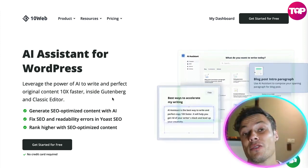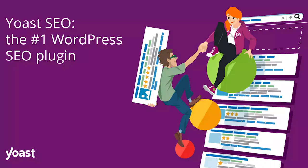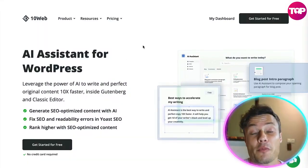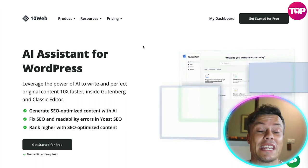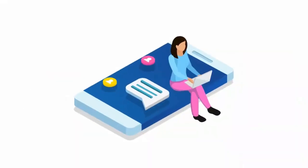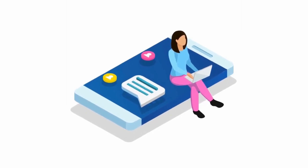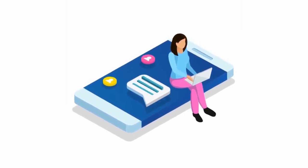You can fix SEO readability errors in your already existing text using Yoast SEO, and you can rank higher with SEO specialized content. Whether you're building your own website or working as part of an agency, you can really scale down the amount of time it takes to produce content for your website in order to build out the SEO content.